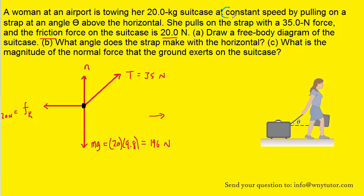To complete part B, we have to notice that the question mentioned that she's pulling the suitcase at a constant speed. Now a constant speed means that the acceleration is equal to 0 meters per second squared.